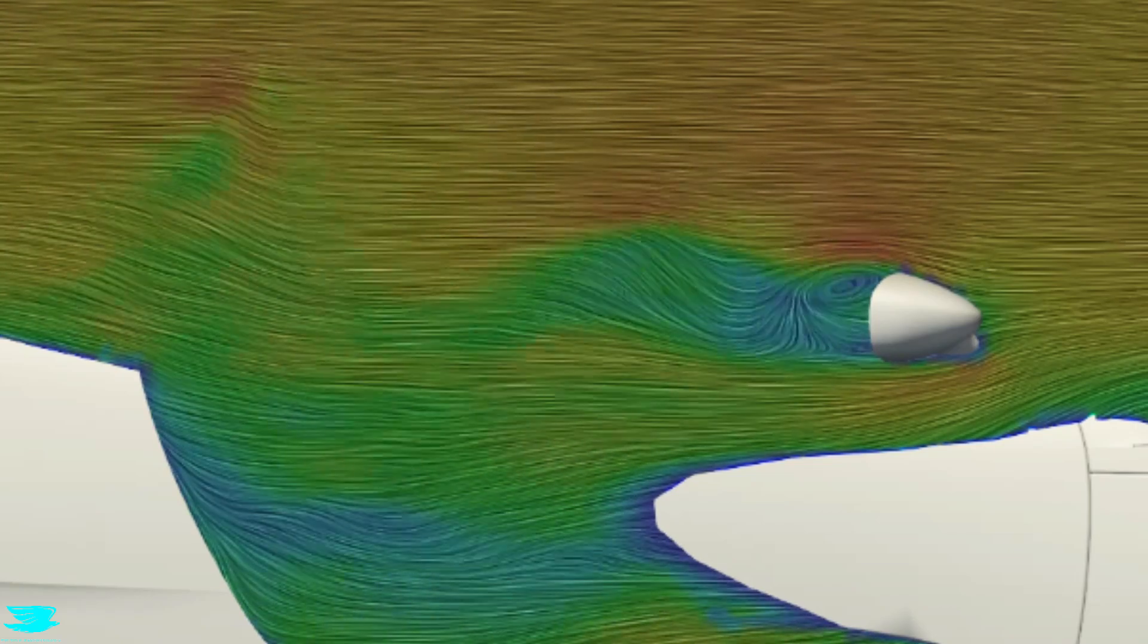Porsche did a good job making the side mirrors pointy at the front. That reduces the drag of them, and actually, you can see how the wake is directed up quite a lot, so the mirror is producing a little bit of downforce. This is different to some supercars and hypercars that try to capture the flow from the side mirror into the radiator.